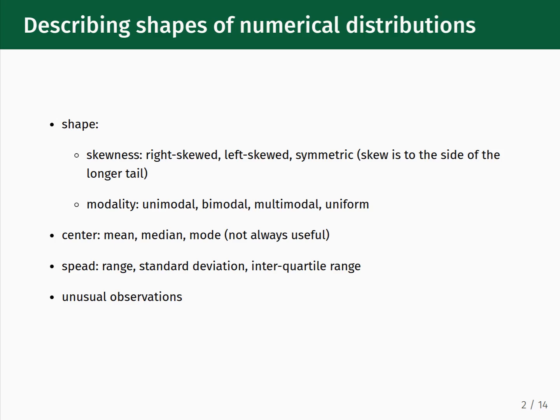There are four kinds of modality: unimodal, bimodal, multimodal, and uniform. We will see visual examples a little later showing what skewness and modality mean. You should also note the distribution's center, its spread, and finally any unusual observations that you see.